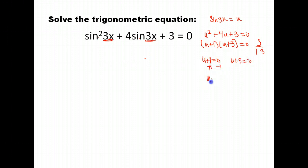Now that I know what u is, I can bring my sine 3x back and say, well, u was supposed to be sine 3x. So, I have two answers. Sine 3x is negative 1, and sine 3x is negative 3.